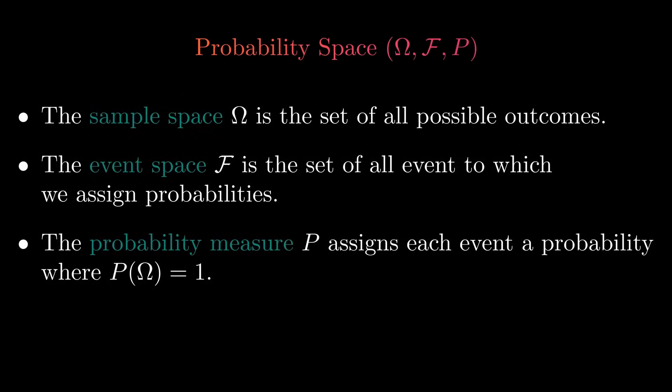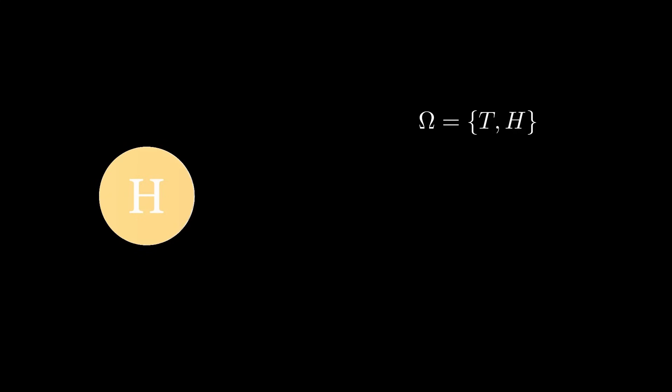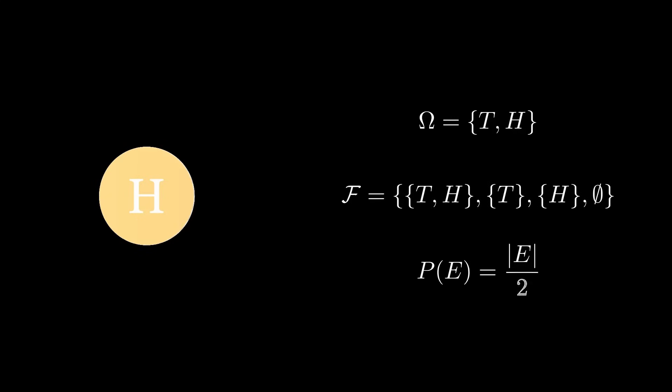One of the most important applications of measure theory is in probability theory. A measure space can naturally be interpreted as a probability space: the whole space is the sample space (the set of all possible outcomes), the sigma algebra of measurable sets is interpreted as an event space where measurable sets are events, and the measure is interpreted as a function assigning to each event a probability. Naturally, the probability of the sample space is equal to one. For example, we can take a look at the flipping of a coin. The sample space consists of the two possible outcomes, tails and heads. The event space consists of all possible events. The probability measure is defined by the number of elements in an event divided by two, so the probability of just tails or just heads is one half, the probability of heads or tails is one, and the probability of neither is zero.